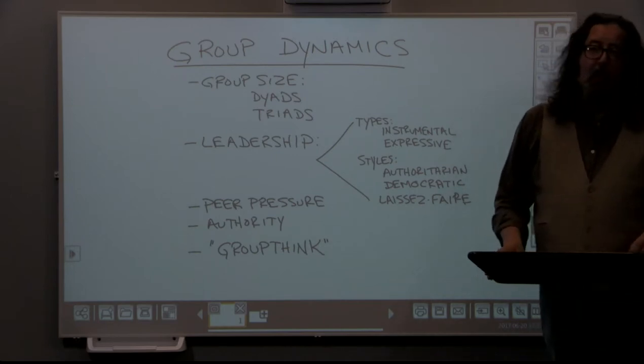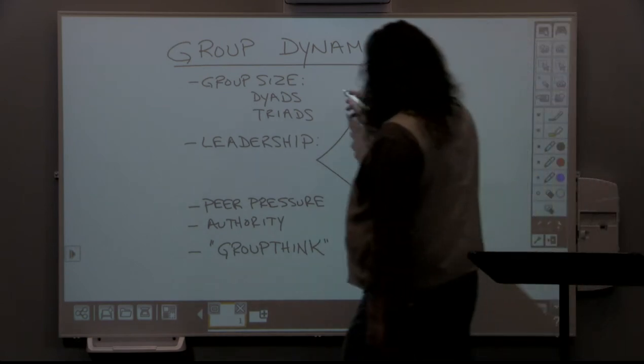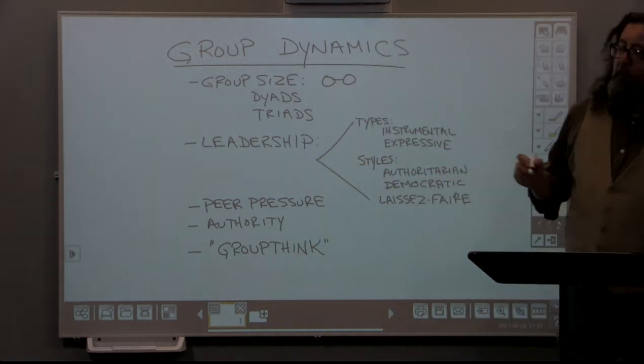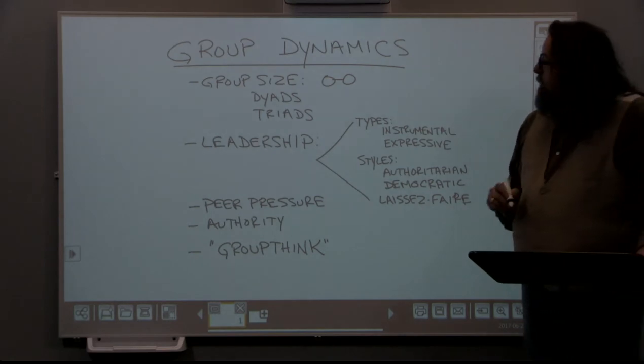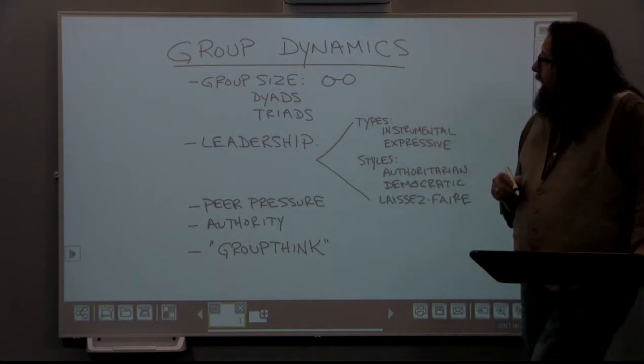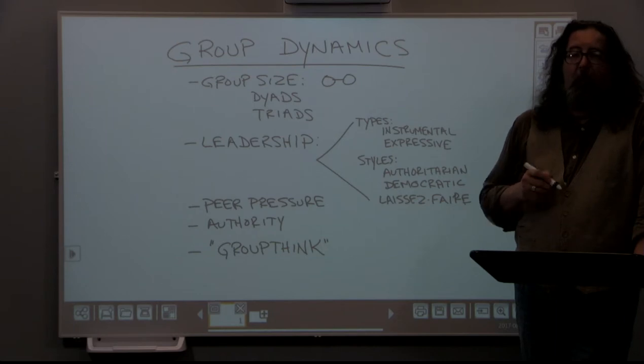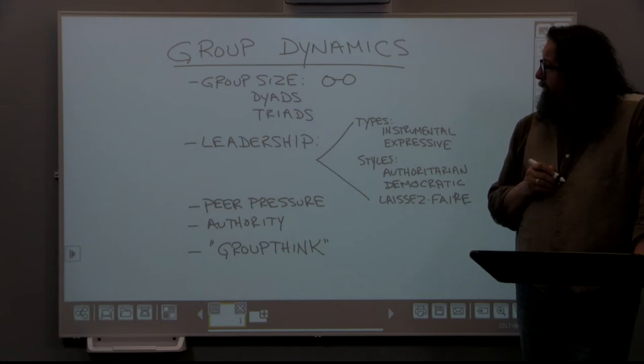One of the things we can take a look at is the size of groups and the ways that influences us. We have some specific names for some of the smallest types of groups. A dyad consists of two individuals. If we want to illustrate that, we might just draw it as two people with one connection between them.